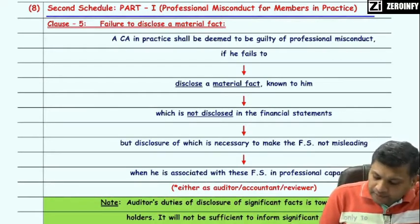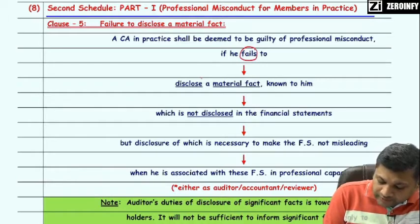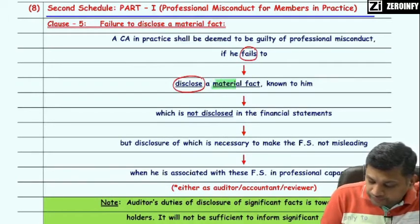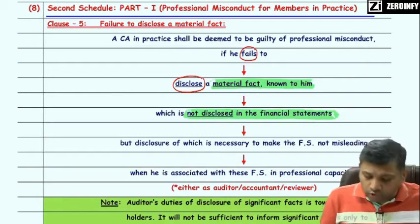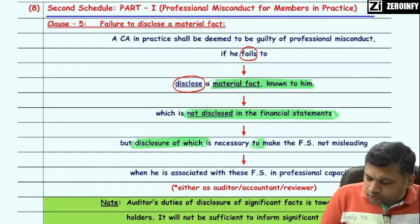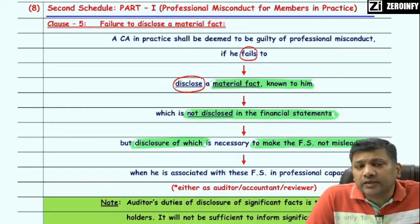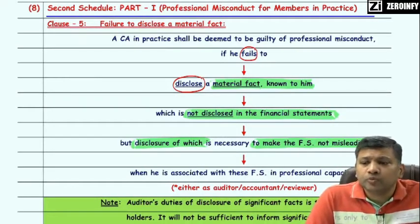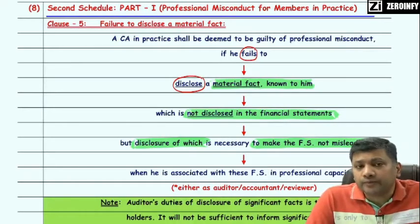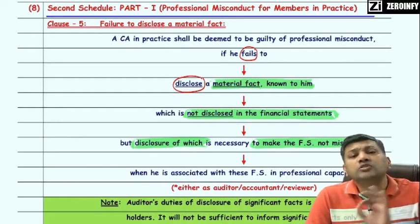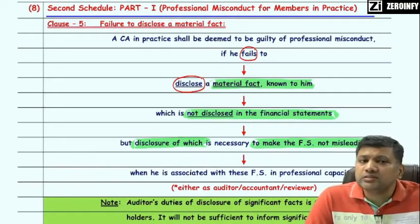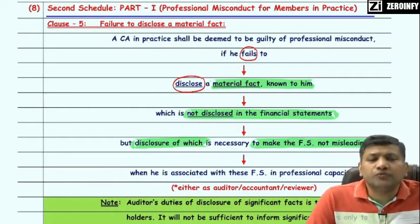Clause 5 of Second Schedule Part 1 states that a practicing member shall be deemed to be guilty of professional misconduct if he fails to disclose a material fact known to him which is not disclosed in the financial statements, but disclosure of that fact was necessary so as to make the financial statement not misleading, when that practicing CA is associated with these financial statements in a professional capacity.